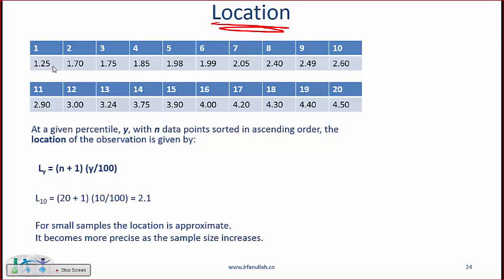Location. Again going with the same data, this is your first item the lowest return going to twenty the highest return. For a given percentile, let's say that percentile is denoted by y, and for n data points, in our example we have twenty data points, the location of the tenth percentile is given by n plus one into ten, what is this ten? This is the percentile divided by hundred. So you get 2.1.